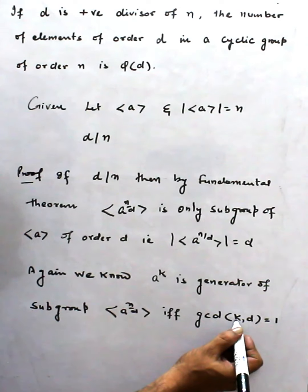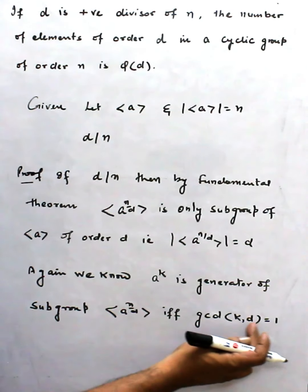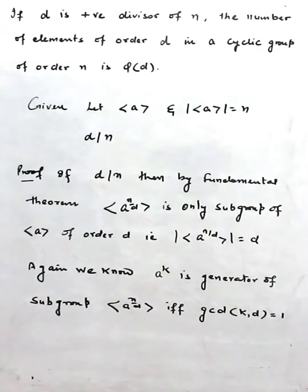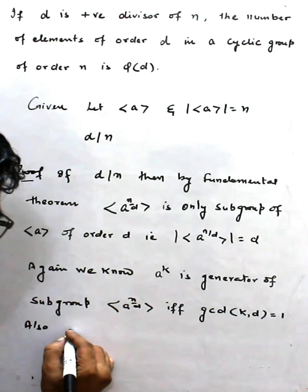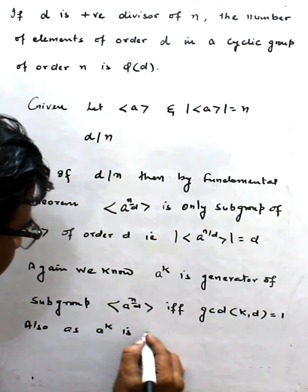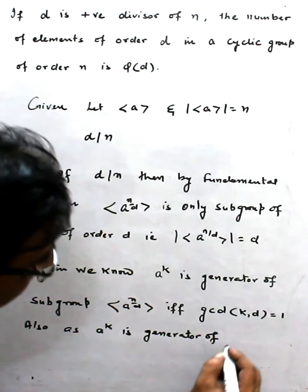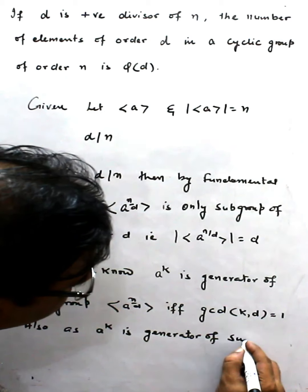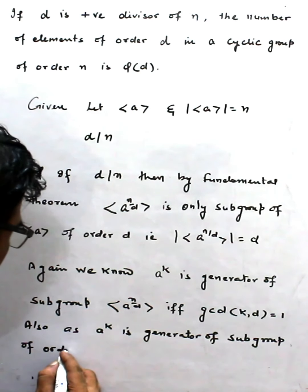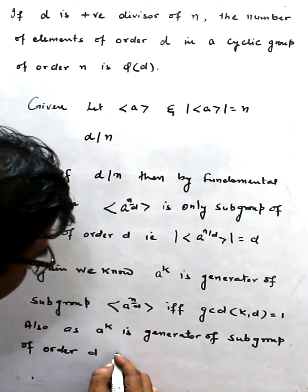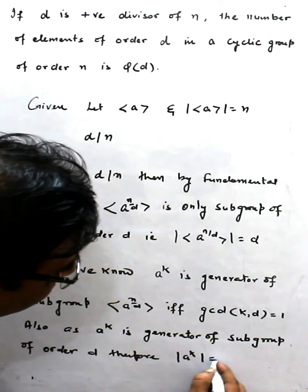How many k's are there which are coprime to d? That means there are many k's which are coprime to d. As a^k is a generator of a subgroup of order d, therefore the order of a^k is also d.